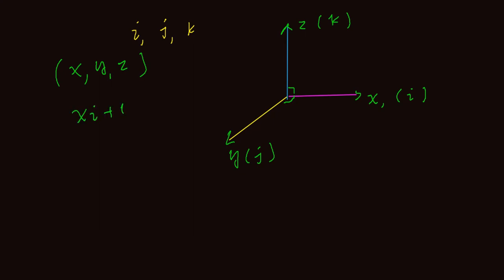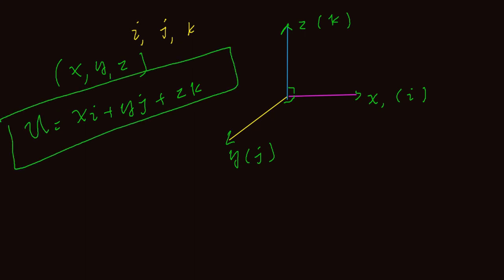So the vector has coordinates: x is three, y is minus five, and z is seven. The x and z components are positive, while y is negative. Substituting: three times i plus minus five times j plus seven times k.